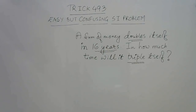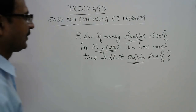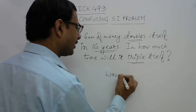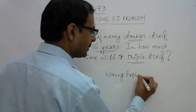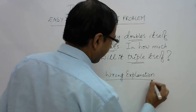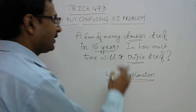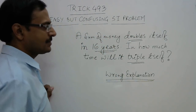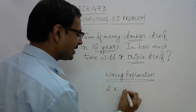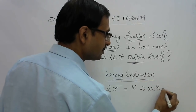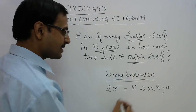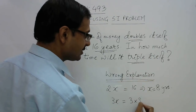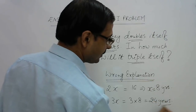I am sure the first answer which comes to your mind is 24 years. And why? Because this is a fallacy — this is the wrong explanation. What most students do is they say it doubles in 16 years, so 2x = 16 years, meaning x = 8 years.